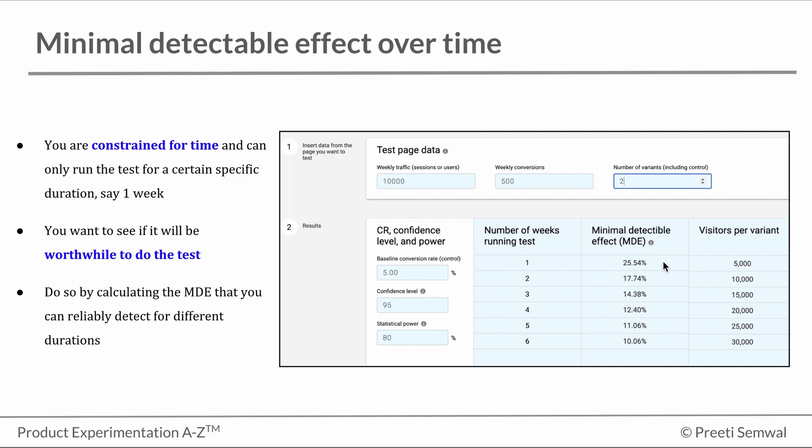However, if I expect the improvement might be around say 15%, then I may want to negotiate to be able to run the test for a longer duration, at least three weeks in this case. Because in this table, if we look at number of weeks against the minimum detectable effect, this is where we will be able to reliably detect an improvement of 15%.